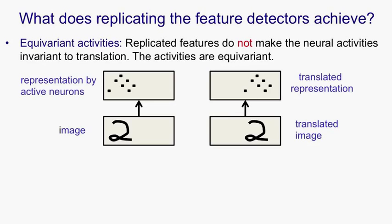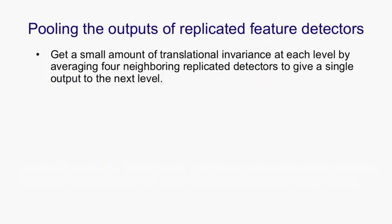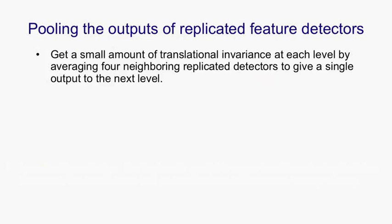There is something that's invariant, and that's the knowledge. So if you learn replicated feature detectors, if you know how to detect a feature in one place, you'll know how to detect that same feature in another place. And it's important to note that we're achieving equivariance in the activities and invariance in the weights. If you want to achieve some invariance in the activities, what you need to do is pool the outputs of replicated feature detectors. So you can get a small amount of translational invariance at each level of a deep net by averaging four neighboring replicated detectors.